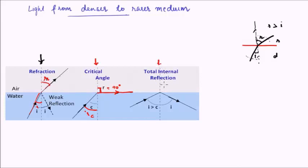In total internal reflection, reflection — exactly the same as the reflection you may have studied in junior classes — will take place, but there is no mirror here. It is just the interface between the denser and the rarer medium. The condition is that the angle of incidence is more than the critical angle. We will see total internal reflection in further detail in our next lecture.